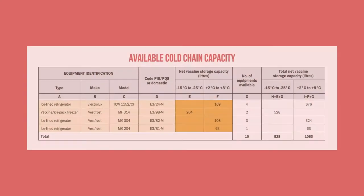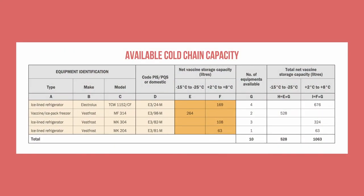Then, record the vaccine storage capacity of each piece of cold chain equipment in the appropriate temperature range column, depending on whether it is a refrigerator, cold room, freezer, or freezer room. Again, you can find these details in the WHO or UNICEF product information sheets or manufacturer's data.